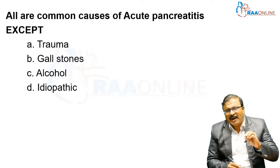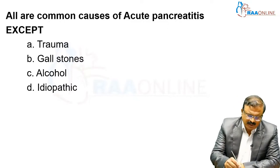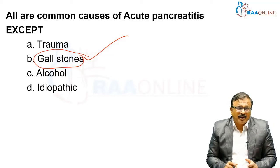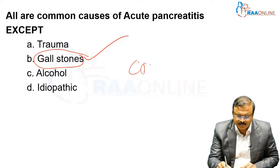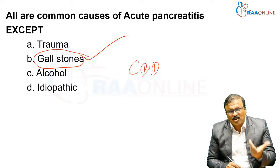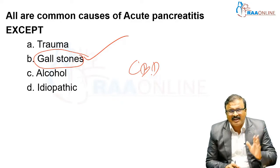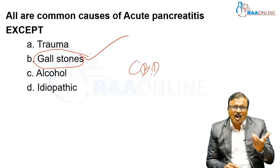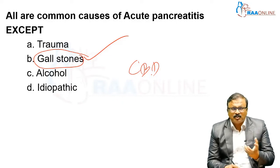The most common cause of acute pancreatitis is gallstones, specifically common bile duct stones. Alcohol is a secondary cause. Trauma can cause duct damage leading to acute pancreatitis. Idiopathic calcific pancreatitis exists, and in certain regions like Kerala, food toxins such as those from tapioca can also produce pancreatitis.